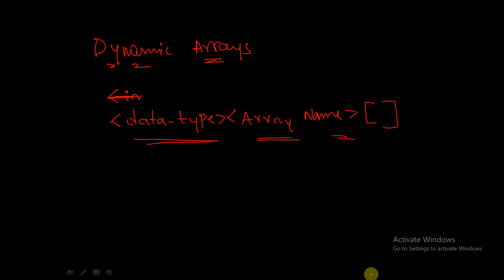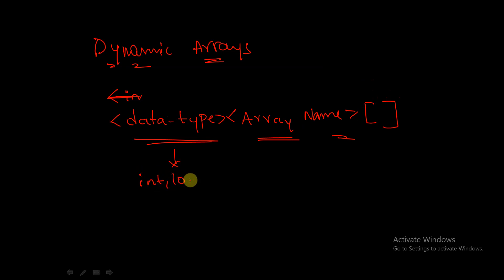So the syntax for dynamic arrays is data type followed by array name followed by empty braces. For the data type, you can use int, logic, or any other data type. Now let's see an example using the int data type.